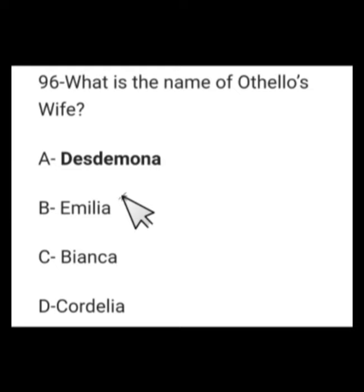The last MCQ, number 32: What is the name of Othello's wife? Options: Desdemona, Emilia, Bianca, or Cordelia. The name of Othello's wife was Desdemona. These were more than 30 very important MCQs from Shakespeare's life and work. Shakespeare is very important in the history of literature. I am quite sure that some of these MCQs will come in your lectureship or subject specialist test. Best of luck to all appearing tomorrow and in the subject specialist test. That's all for today, thank you very much.